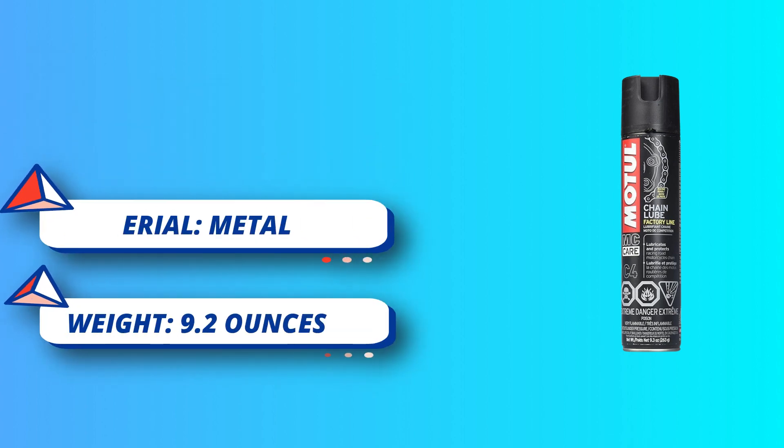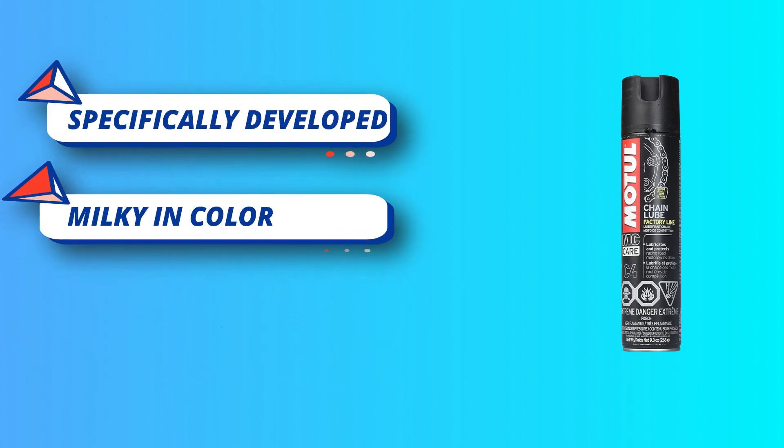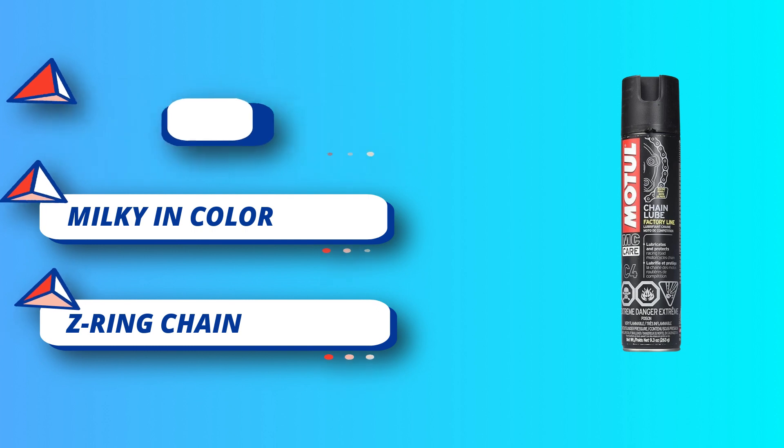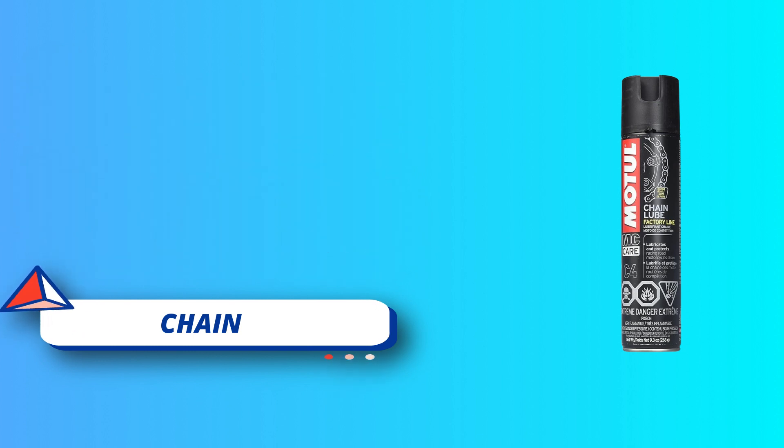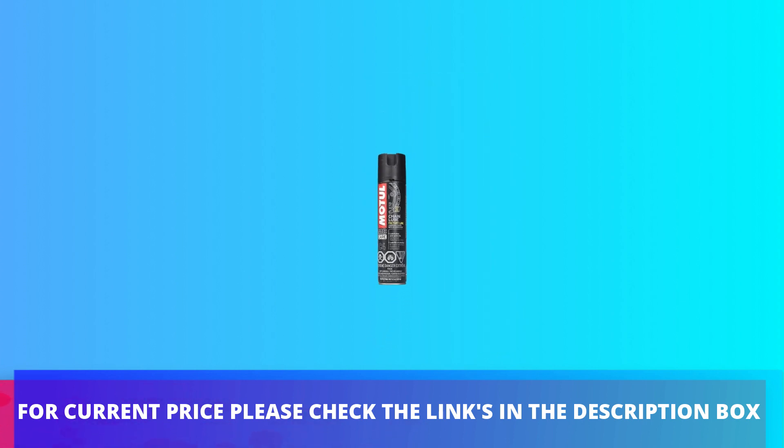Motil C1 Chain Clean provides a cleaner chain than kerosene and competing cleaners in half the time, with zero damage to seals and rings. For current price, please check the links in the description box.